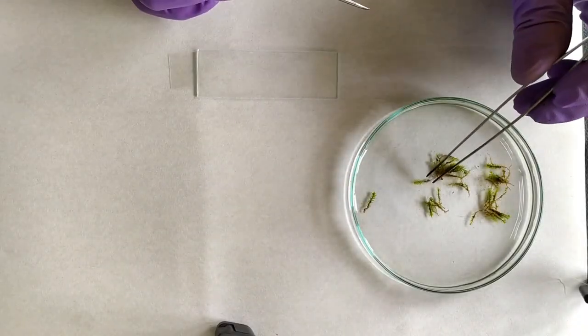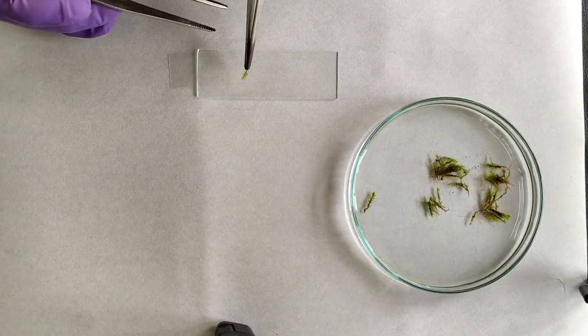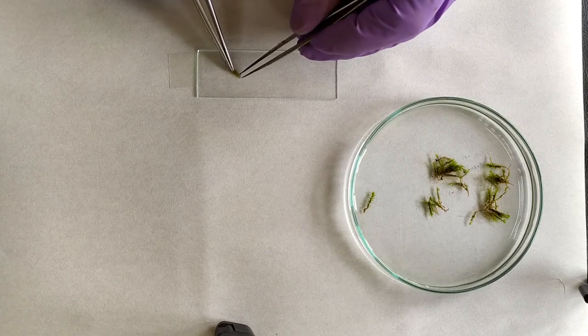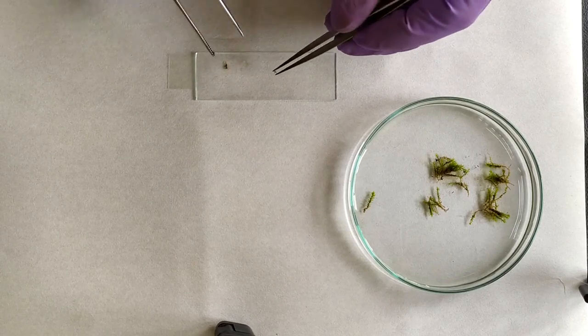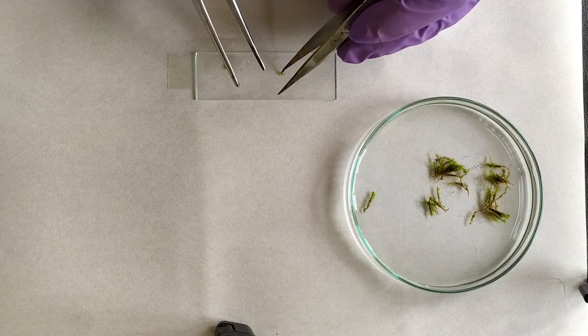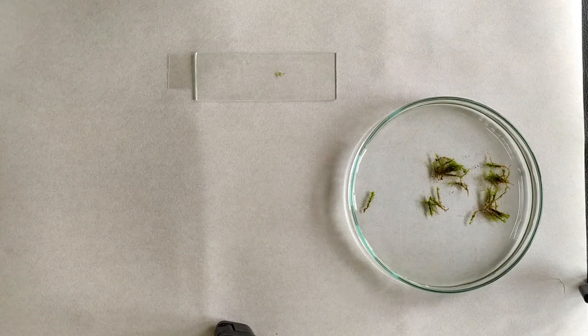Preparing a whole mount or WM material is pretty straightforward. All you need to do is isolate the part of interest and mount it on the slide for further observation and studies, so we'll not be covering this in more detail in this video.